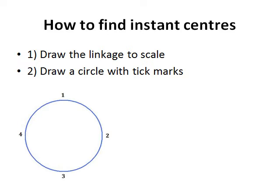How do we find instant centers? We use the Kennedy-Arenhold theorem, which says that if there are three bodies, then there are three instant centers, and those three instant centers are collinear.